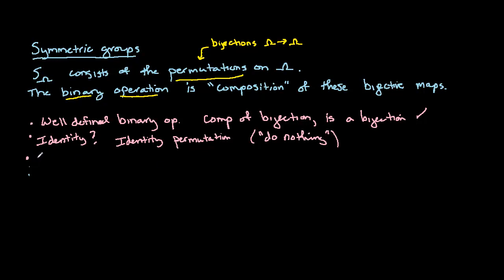Secondly, we would need to check that inverses exist. So is that true? Well, certainly if we have a bijection, so if sigma is a bijection, so is its inverse. So not only does the inverse exist, but the inverse is also a bijection. And since S omega consists of all the permutations on omega, if sigma is in there, then sigma inverse is also in there, because it's also a bijection from omega to omega. So that is satisfied.